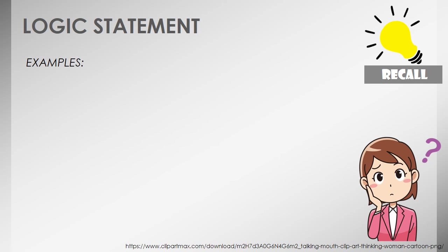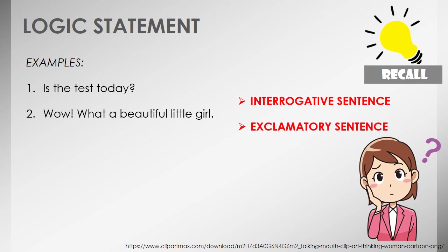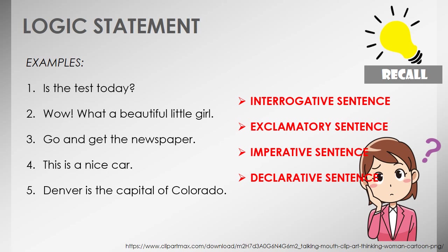Looking at examples: the first sentence asks a question, therefore it is an interrogative type of sentence. The second sentence shows strong or sudden feeling justified by the phrase 'wow,' therefore it is an exclamatory sentence. The third one clearly gives a command, hence it is an imperative sentence. The fourth sentence states an opinion, therefore it is a declarative sentence. And the last one obviously states a fact, therefore it is also a declarative sentence.